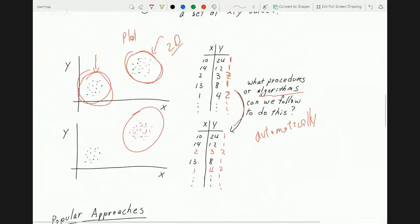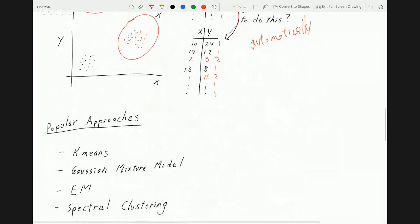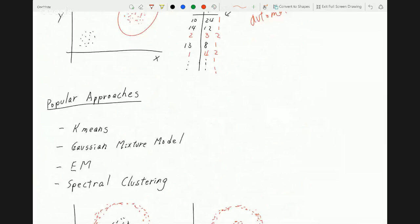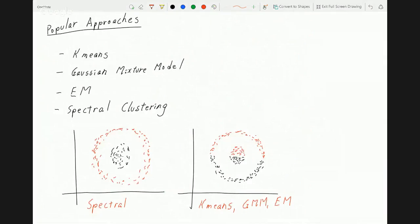Well, that's what clustering is for. And therefore, that's why we're going to go over some approaches. The most popular approaches right now are K-means, that's very popular, Gaussian mixture model, expectation maximization, spectral clustering. Needless to say, the topic of today is spectral clustering.